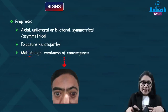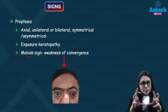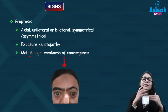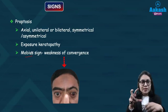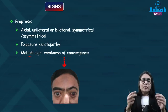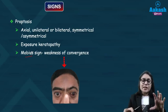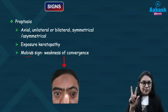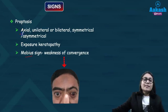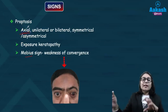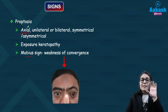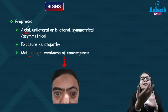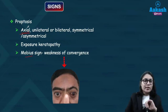Along with all these lid signs, there is presence of proptosis, which can be unilateral, bilateral, or asymmetrical — one eye gets involved first and then eventually the other. The proptosis seen with thyroid eye disease is axial proptosis. In cases where proptosis is so severe that the lid is unable to cover the eye properly, this leads to exposure and can affect the cornea, causing exposure keratopathy.